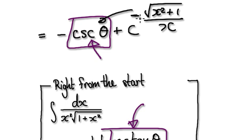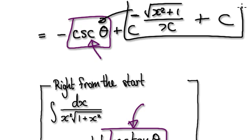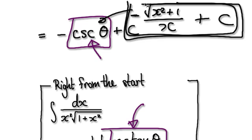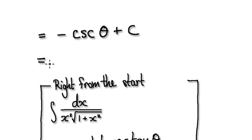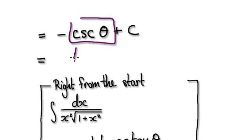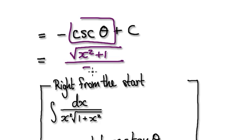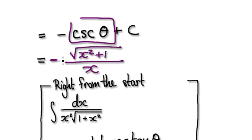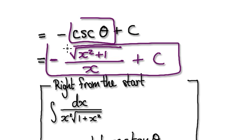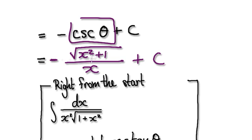Going back to our expression, this thing here is actually the square root of x squared plus 1 over x. There's a minus here, so it would be minus square root of x squared plus 1 over x, plus c. So this here is our answer — it's quite messy, but that is our final answer.